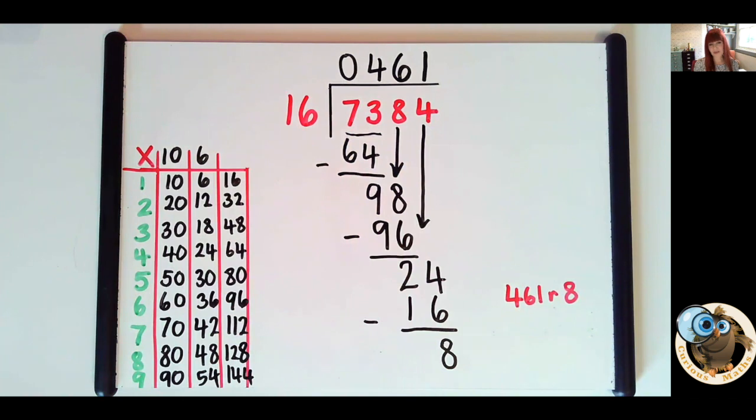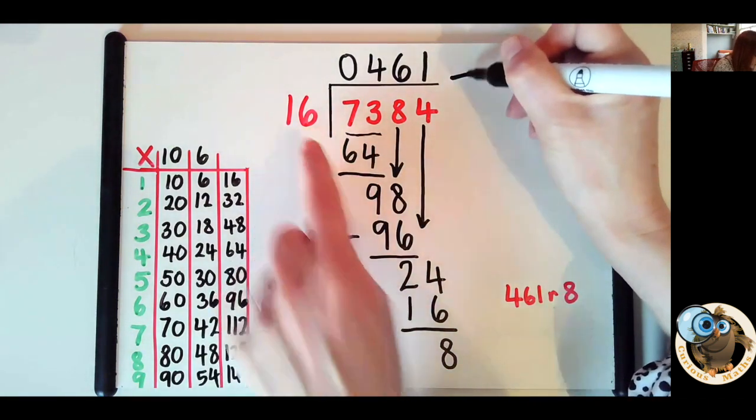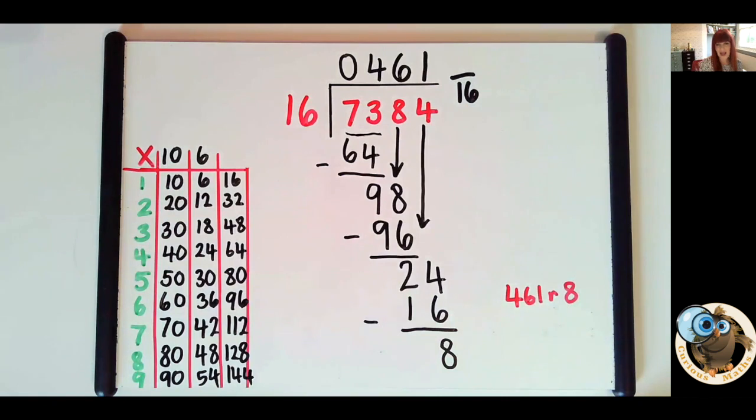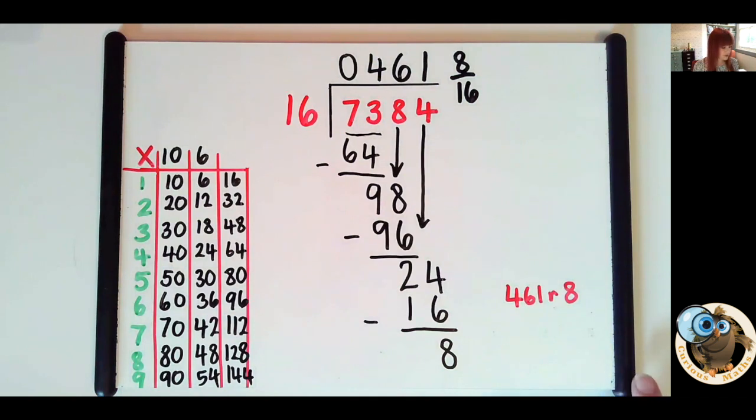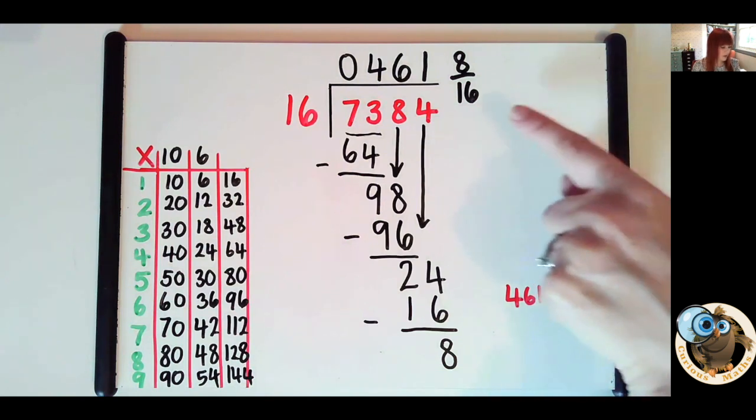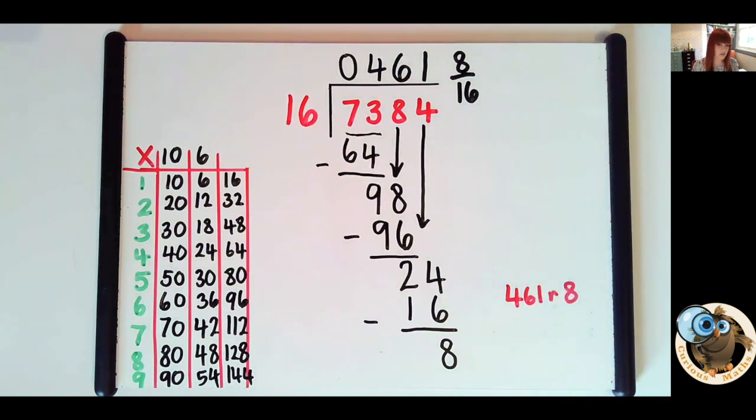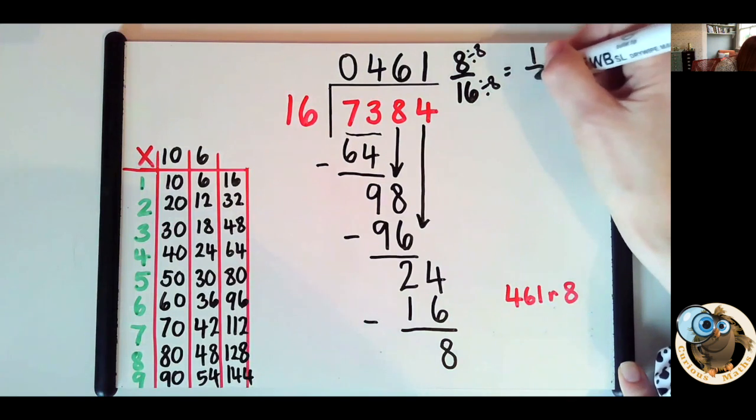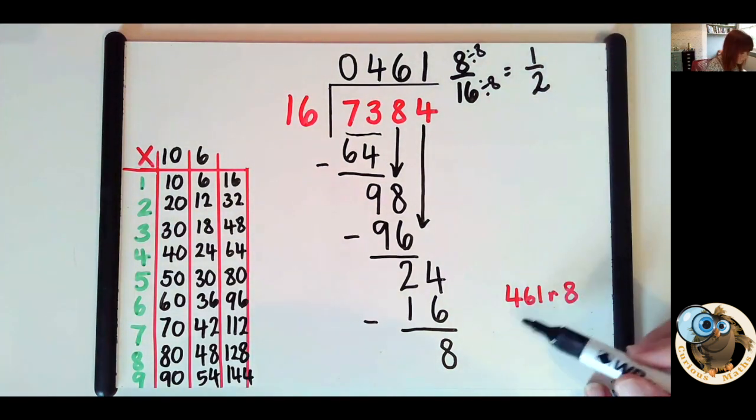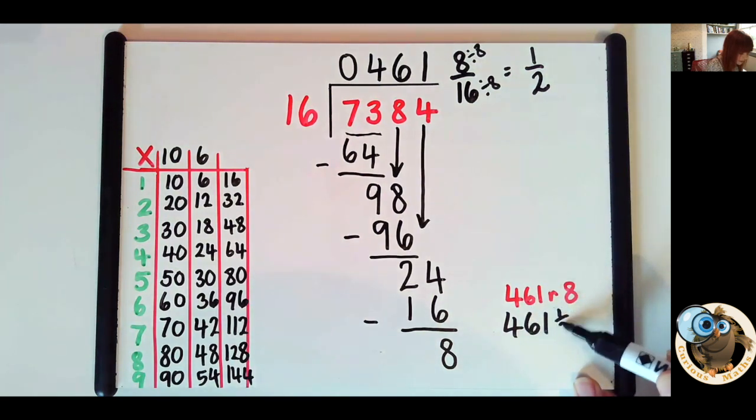Now let's have a look at how we represent that remainder as a fraction. So here it is represented as a whole number, remainder 8. For a fraction, it's very simple. All we need to do is we take our divisor, the number we've been dividing by, and make that our denominator, and we put our remainder on the top as our numerator. So our answer becomes 461 and 8 sixteenths. Now I'd expect a year six child to simplify 8 sixteenths and recognise that you can divide it down. If you divide them both by 8, we get a half.